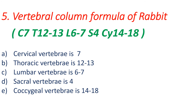After pig, we will discuss the case of rabbit. Rabbit is also a mammal, so it will also start with C7, because cervical vertebrae in all mammals is 7. Rabbit's vertebral formula: C7, T12 to 13, L6 to 7, S4, and coccygeal 14 to 18.